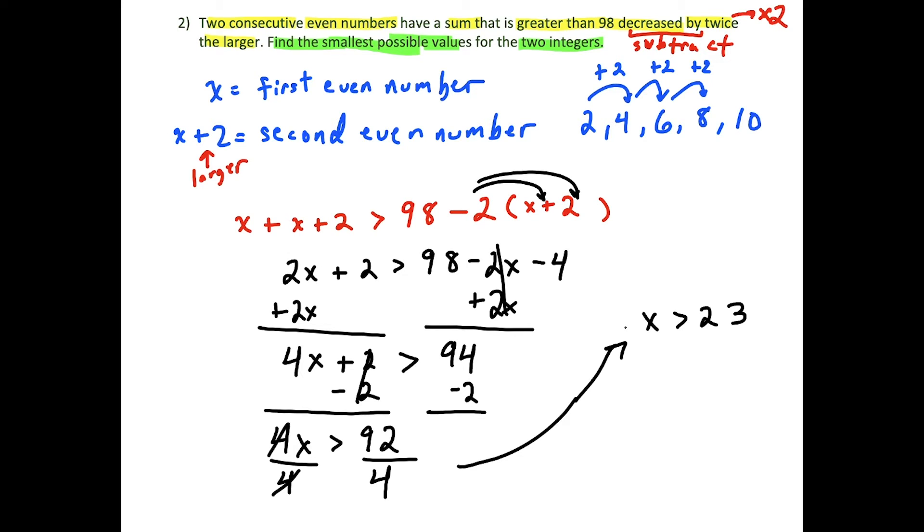Now we have to interpret our answer. You should be asking yourself, what is the first even number greater than 23? Well, the next integer 24 is even. So x, in this case, we want to find the smallest possible values for the two integers. So we're going to say here that the first number x is equal to 24. And then if x equals 24, then x plus 2 is going to be 26. So these are in fact our two solutions.